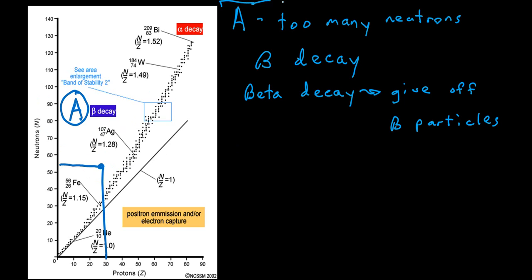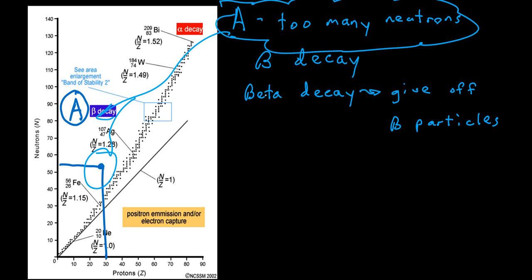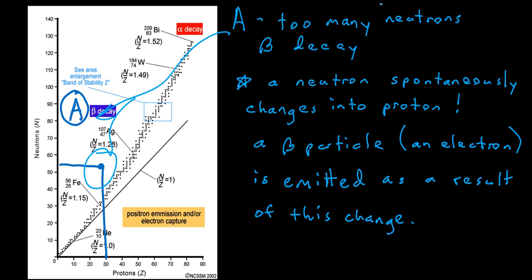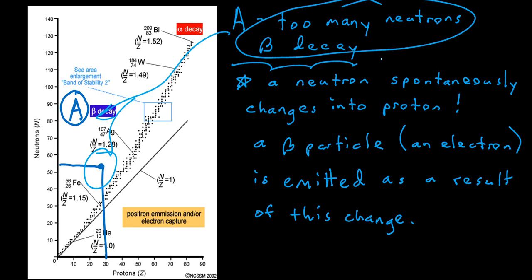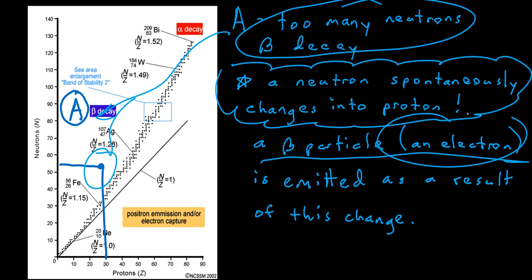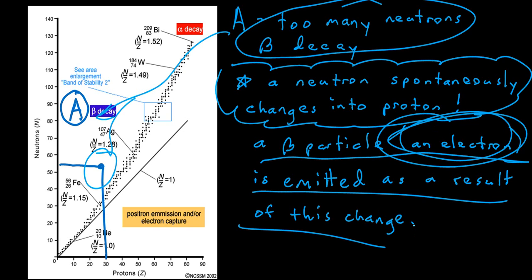Let's first focus on region A, up and to the left of the band of stability. Region A is where too many neutrons are the issue causing nuclear instability. If something has too many neutrons, the type of radioactive decay it undergoes is known as beta decay, where we give off beta particles. In beta decay, a neutron spontaneously changes into a proton within the nucleus, and a beta particle — which is the same thing as an electron — is emitted as a result of that change.